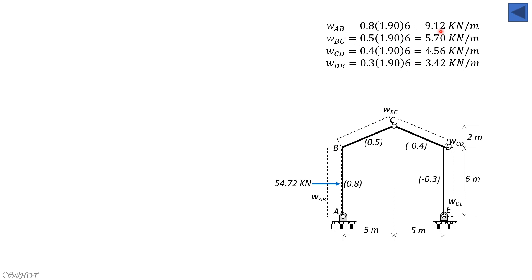For W_BC, horizontal is 5.7 times 2, because this is 2, rightward is 11.4. And of course, that's the centroid, 1 meter from B, also 1 meter from C. 11.4. Then we have vertical load which is downward because this is pressure. So 5.7 times 5, vertical horizontal projection rather, equals 28.5.